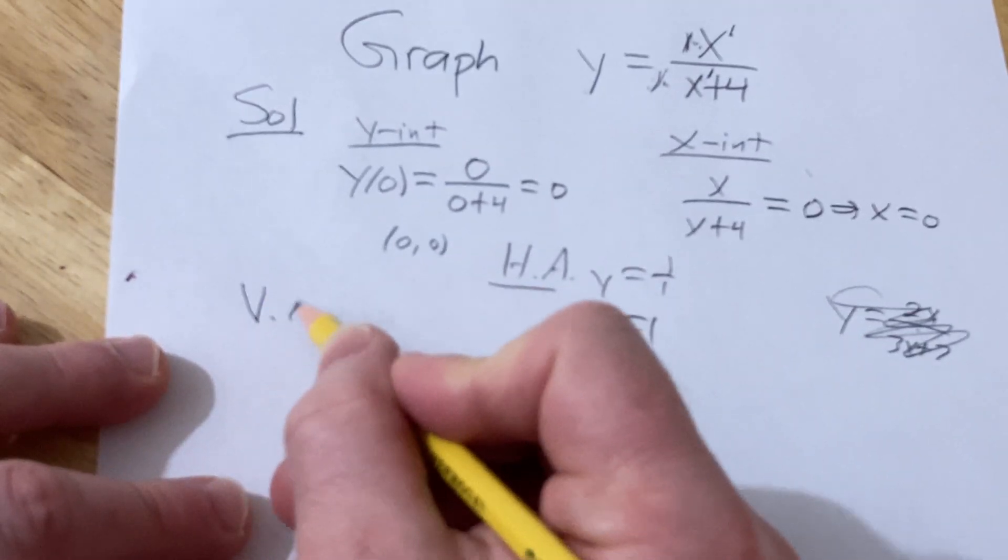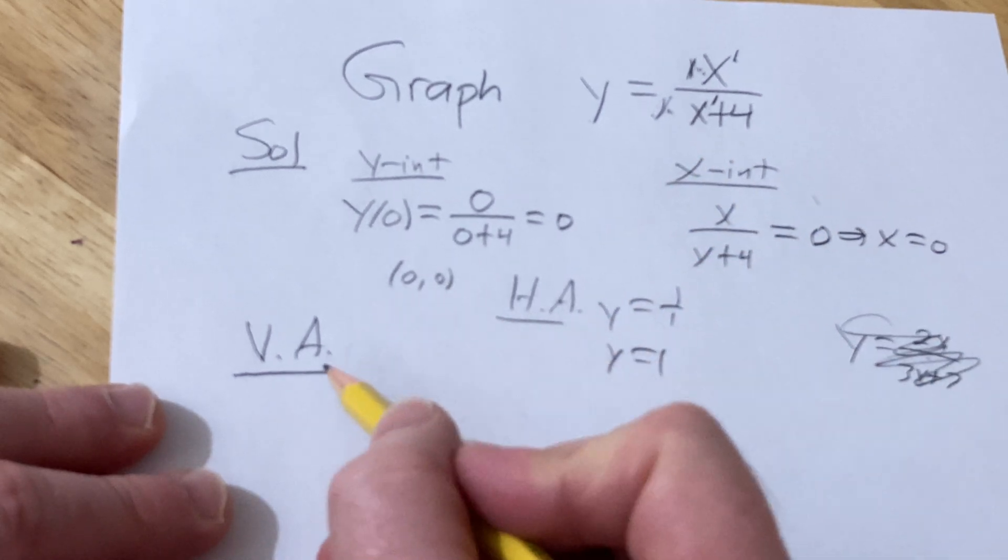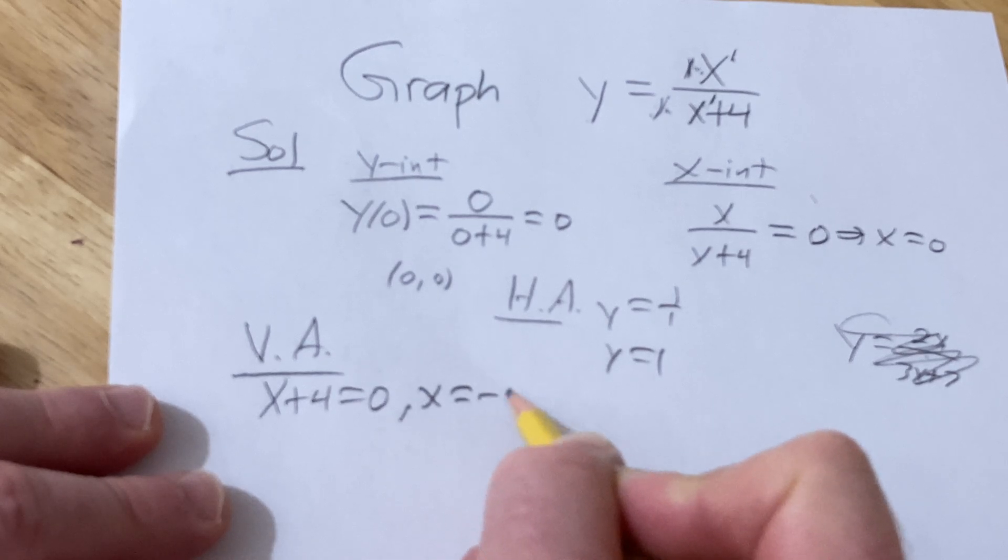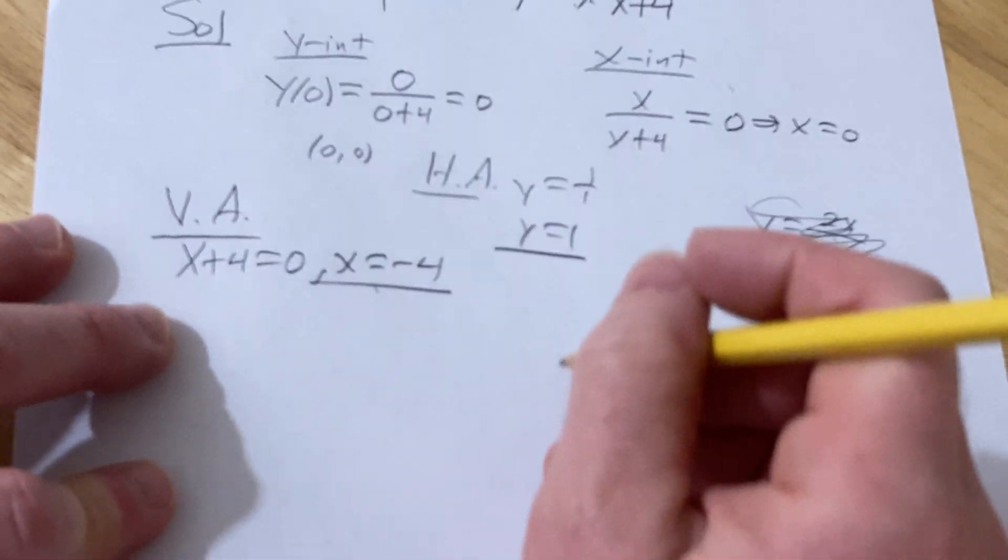To find the vertical asymptote, you basically set the bottom equal to 0 after simplifying. Nothing simplifies. So we set the bottom equal to 0. So we get x equals negative 4. All right, so we've got our HA, we've got our VA. Let's put it all together and do our graph.